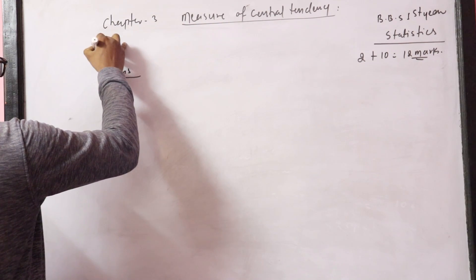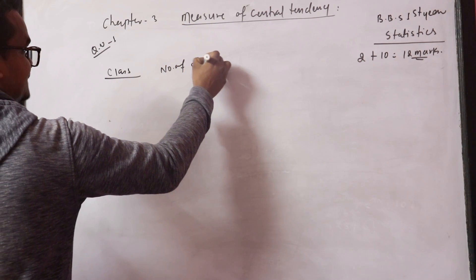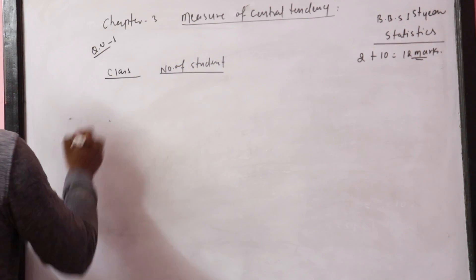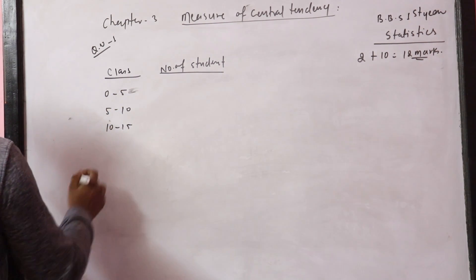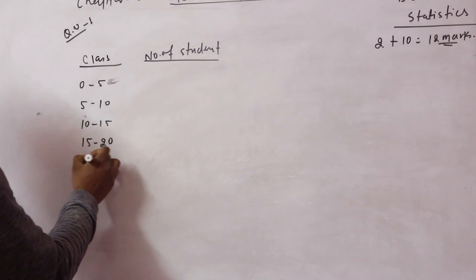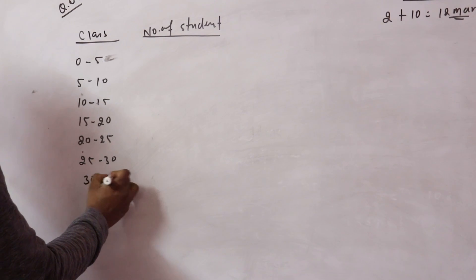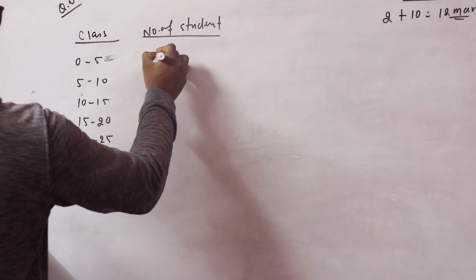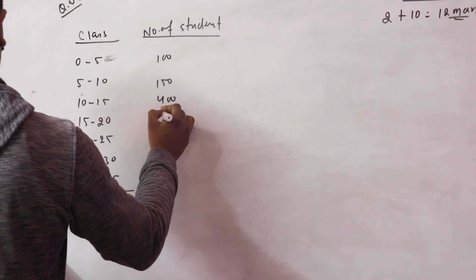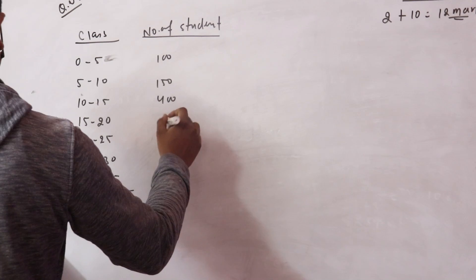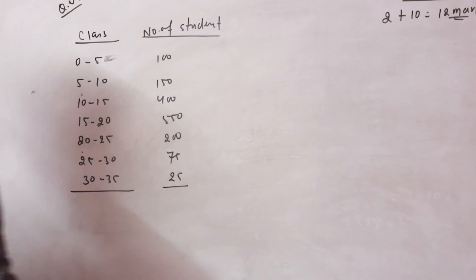Question number one: Class intervals and number of students. Class: 0–5, 5–10, 10–15, 15–20, 20–25, 25–30, 30–35. Number of students (frequencies): 100, 150, 400, 550, 200, 75, 25.